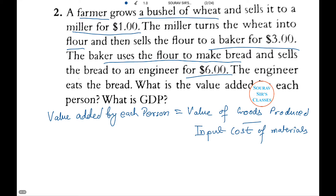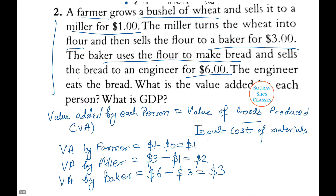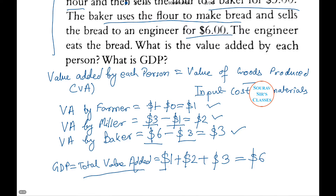Value added by each person equals the value of goods produced minus the input cost of materials. The value added by the farmer is $1. The value added by the miller is $2, because she sells the flour to the baker for $3 but pays only $1 for the wheat. The value added by the baker is $3, because she sells the bread to the engineer at $6 but pays the miller for the flour only $3. Thus, GDP equals the total value added — $1 + $2 + $3 — which comes to $6. Notice that the GDP equals the final value of the good.